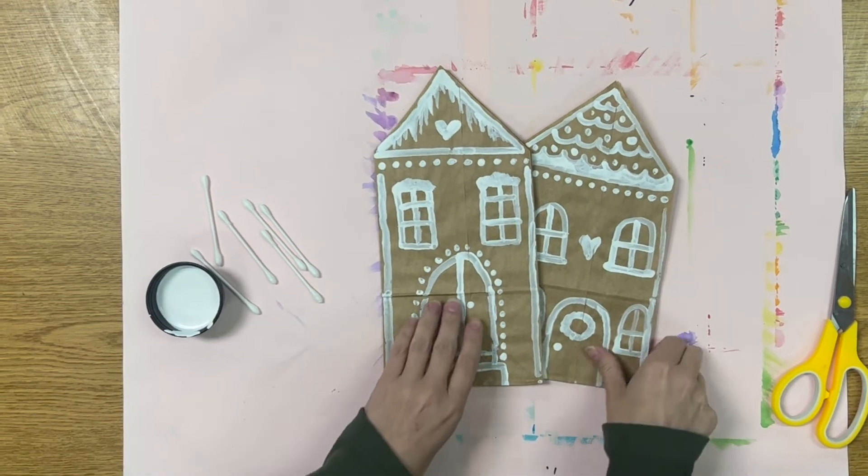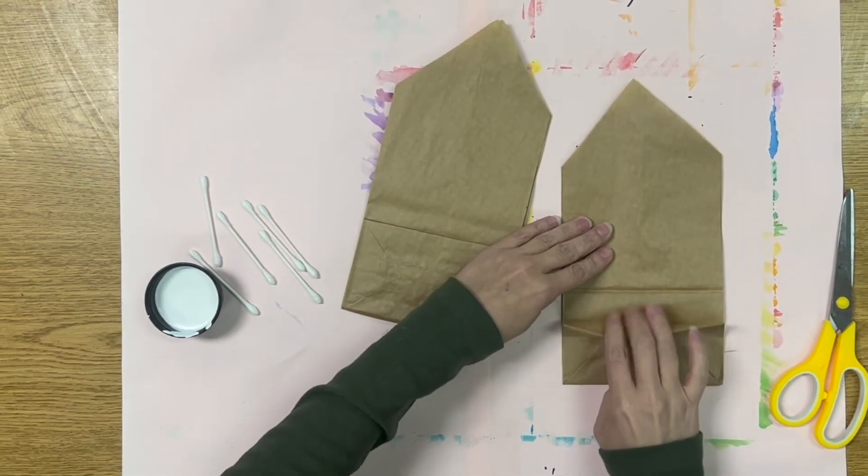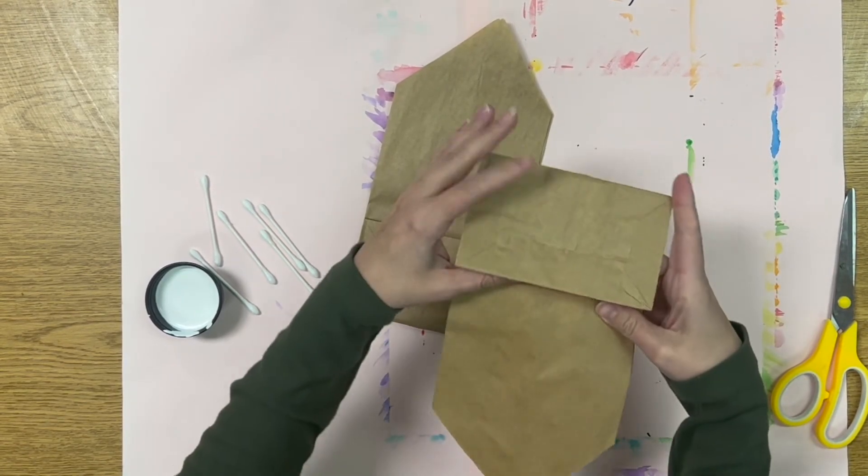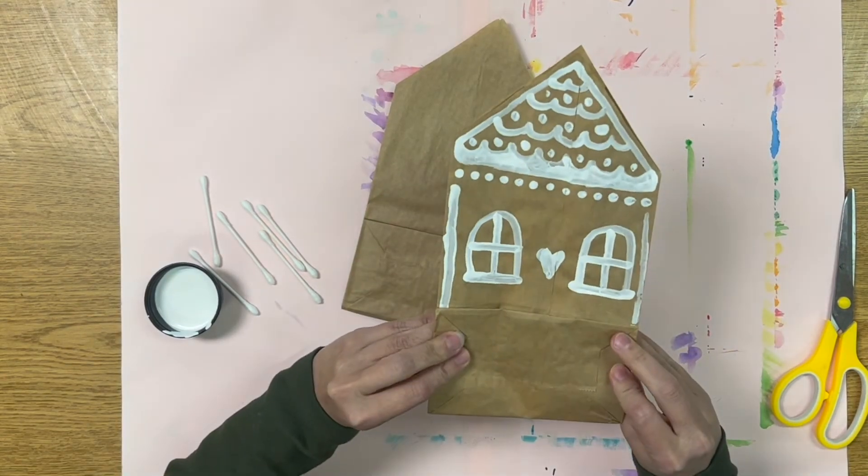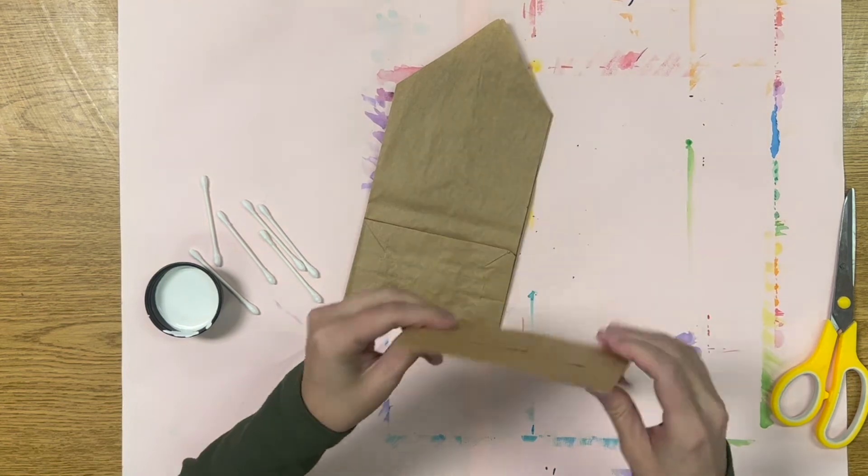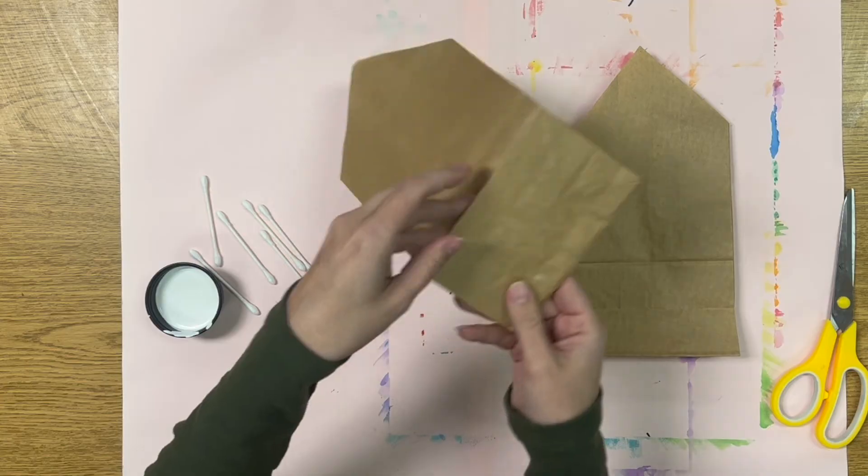Now that our projects have dried, we will flip them over so that we can decorate the back side. First, it is important to make sure that we flip the flap over. Grab the flap and fold it over so that it is covering your other side of the painted paper. Now you should have a completely flat side.